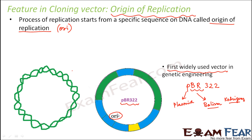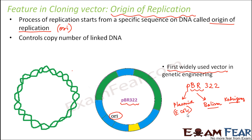In PBR322, the origin of replication is derived from the E. coli plasmid. This is essentially required for replication once inserted inside a host — and that is the very purpose of the vector: so that the foreign DNA is able to replicate once introduced inside the host. The ORI also controls the copy number of the linked DNA, so we need to select a vector whose origin supports a very high copy number.